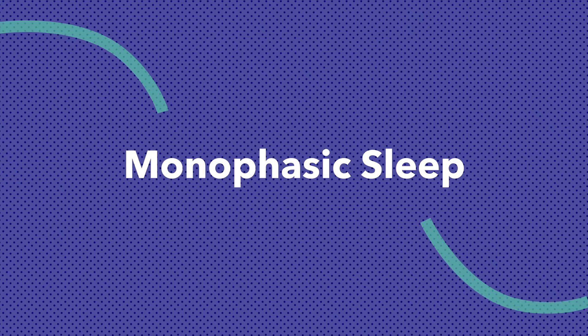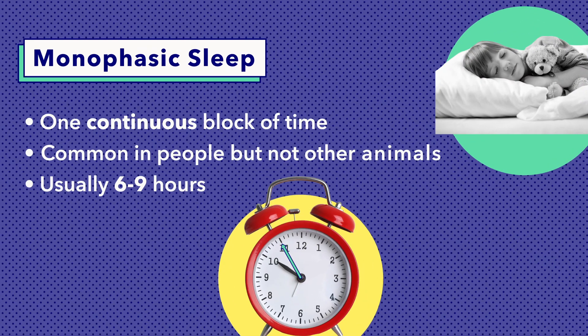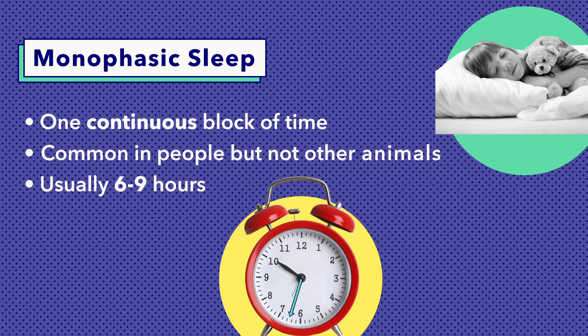Let's start by talking about monophasic sleep. Sleep in human beings usually takes place all at once or in two phases. Sleeping in one consolidated block of time is called monophasic sleep. This type of sleep is common in people but less common in other animal species. Monophasic sleep usually lasts between six and nine hours, but can be shorter or longer depending on genetics and lifestyle choices.